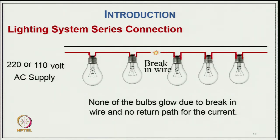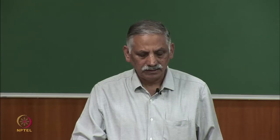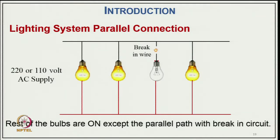We have a lighting system with series connection — in India we have a 220-volt system and in North America a 110-volt system. If bulbs are connected in series, the disadvantage is that none of the bulbs will glow if there is a break in the wire, as seen here. Because of this, we connect all lighting loads in parallel with the 220V or 110V supply, so that if there is a break only one bulb will not glow while the remaining ones will.